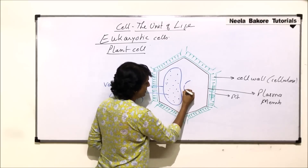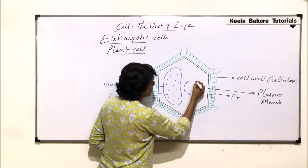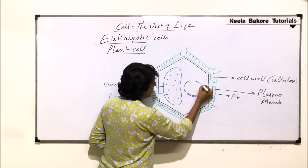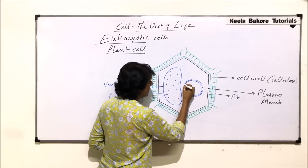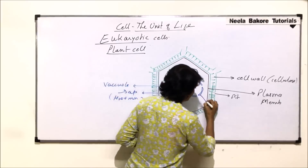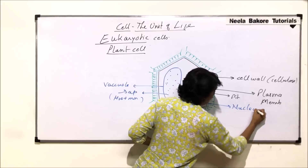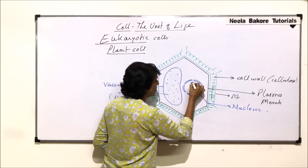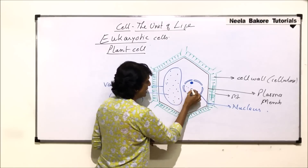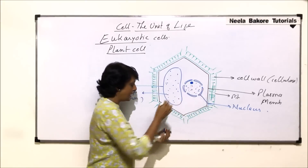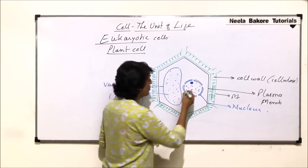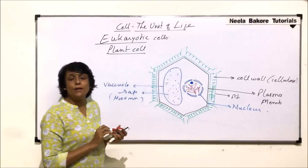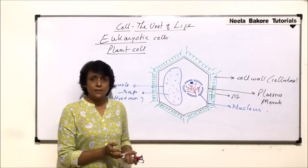Because of the large vacuole, the nucleus is drawn on one side — it is not in the center but slightly shifted. It has a double membrane and nuclear pores. Inside are the nucleolus, nucleoplasm, and chromatin fibers. The structure of the nucleus is the same as in the animal cell.